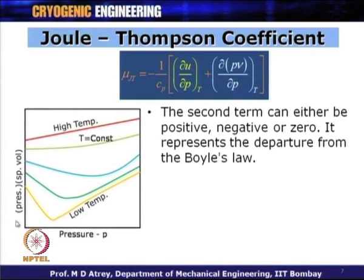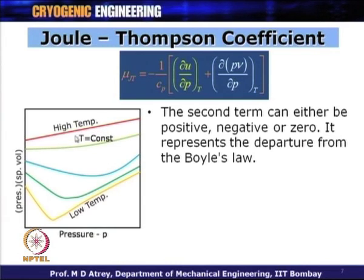Please look at this graph, which shows PV variation versus pressure. For high temperature, PV decreases when pressure decreases, so del(PV) by del P is positive. As temperature goes lower, there is a variation in the curve — for some part PV decreases, for some part PV increases — and the sign of del(PV) by del P changes.